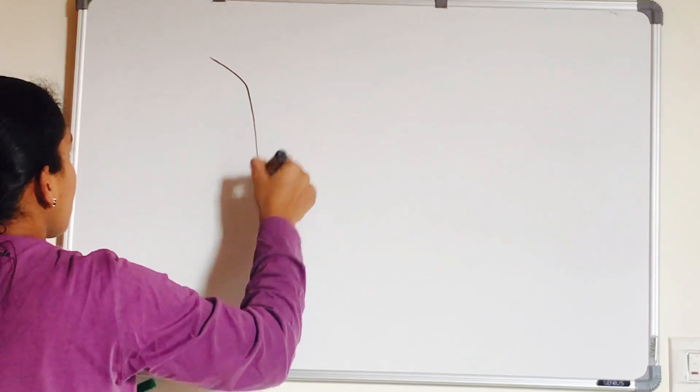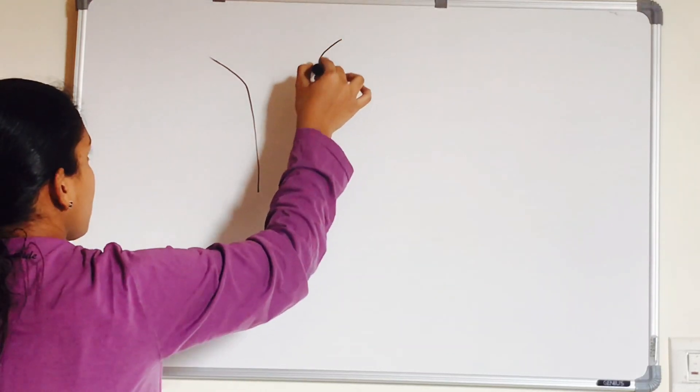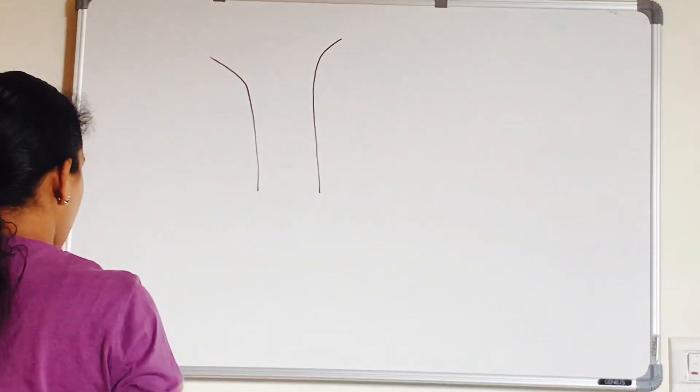We have already seen that foregut, midgut, and hindgut are developed from the primitive gut which is from the endoderm.